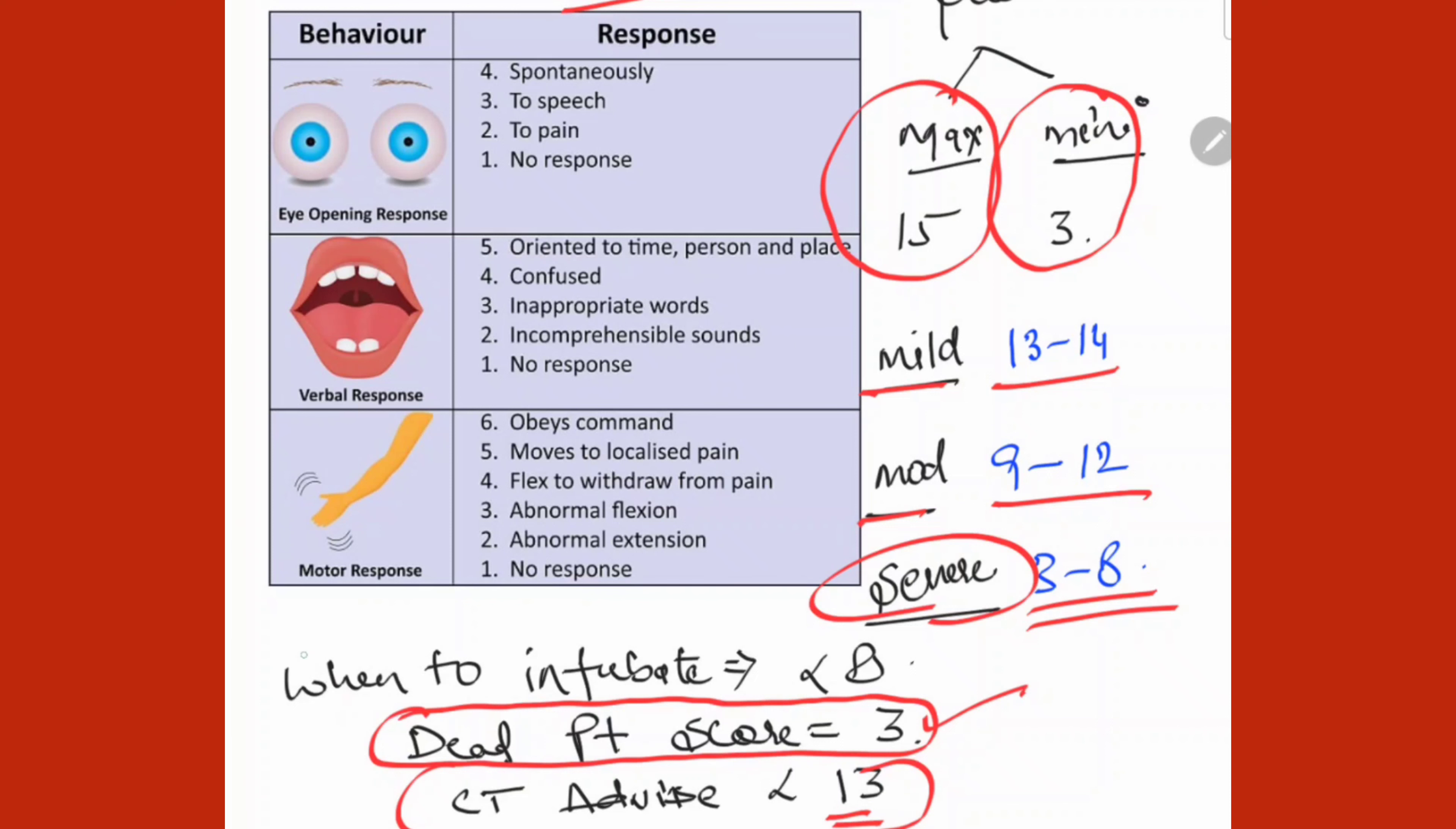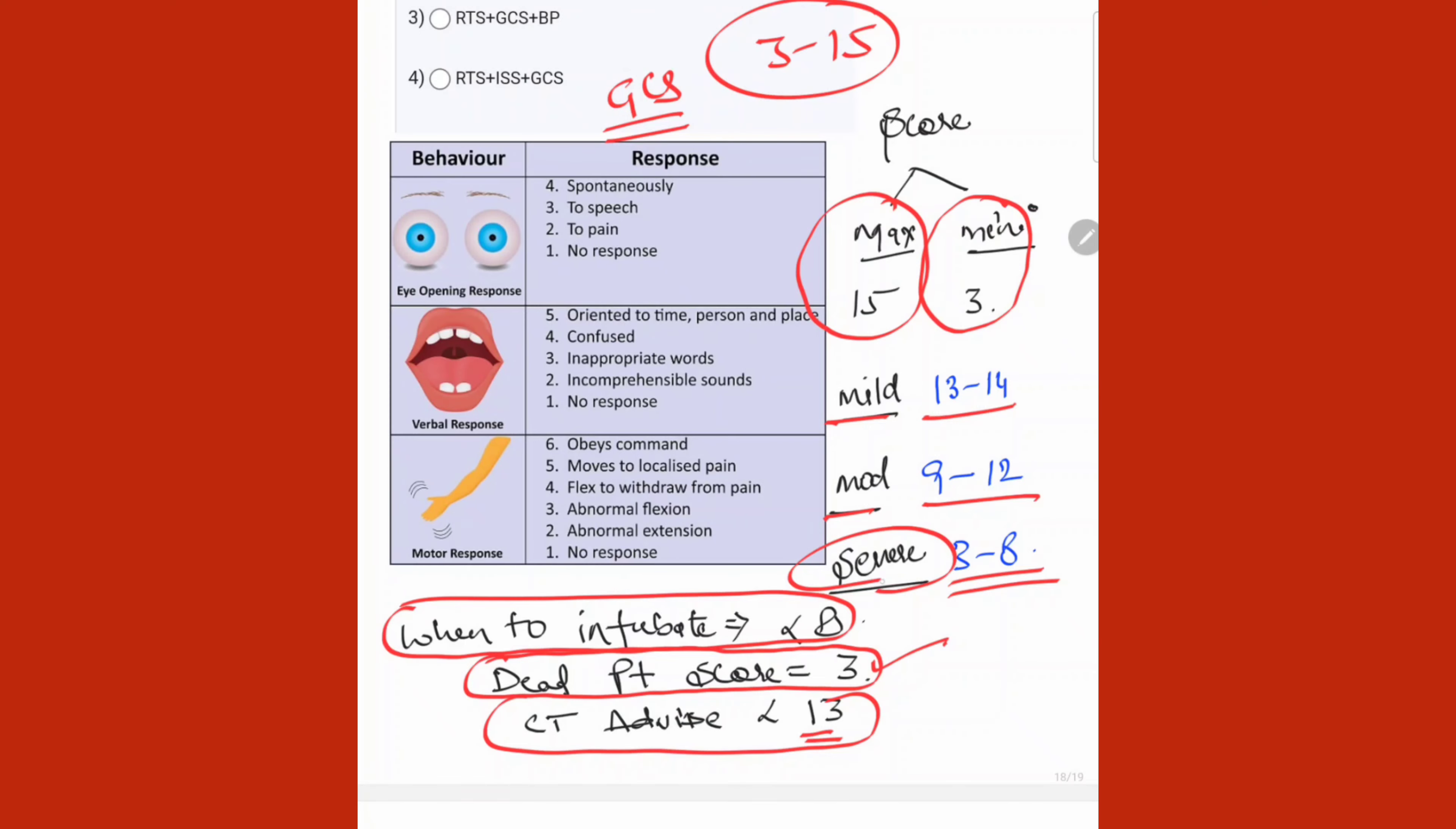Now another question: when to intubate patient? Less than 8. Means when your GCS is in severe category, answer is less than 8. When patient's GCS is in severe category, this is the answer.